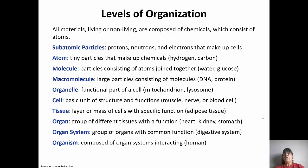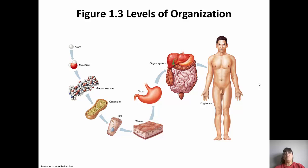All of these organ systems interact to make humans what we are. Importantly, subatomic particles, atoms, molecules, and macromolecules are not living things - we'll cover those in the next chapter on chemistry. Life begins at the cell, which is the basic structural and functional unit of life. All living things are made of cells, as cell theory states. Cells make up tissues, covered in chapter five, which make up organs, which make up organ systems, and finally the organism - which is what anatomy and physiology studies.